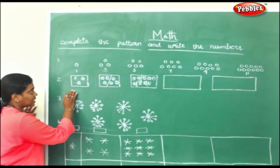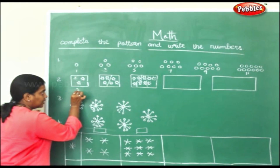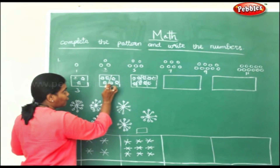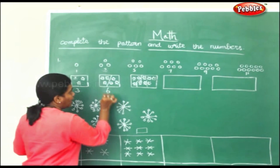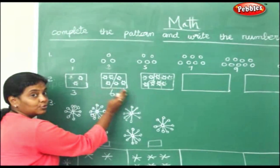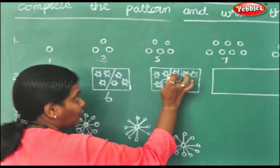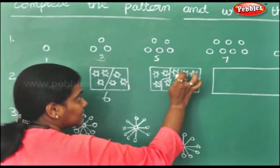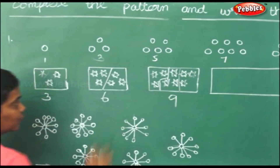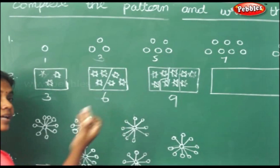Now look at this task. How many stars are there? 1, 2, 3. How many stars are here? 1, 2, 3, 4, 5, 6. How many here? But in 2 groups — 6 in 2 groups. Here 1, 2, 3, 4, 5, 6, 7, 8, 9 in 3 groups. So this is nothing but your 3 times table: 3, 6, 9.